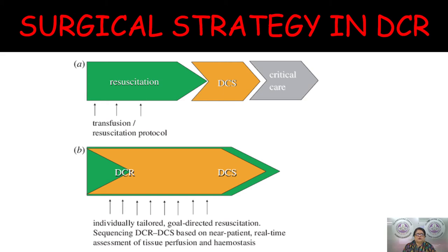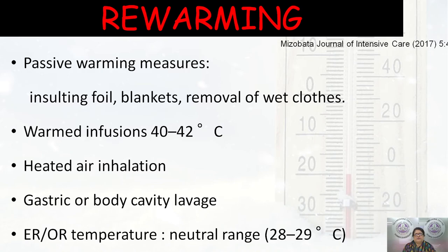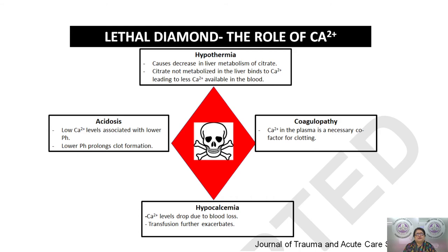Surgical strategy is integrated into damage control resuscitation — once resuscitated, the patient should go for damage control surgery and return to ICU for definitive management. Rewarming should always be considered using insulating foils, blankets, removal of wet clothes, warmed infusions at 40–42°C, heated air inhalations, or invasive warming such as gastric and body cavity lavage, keeping the OR or ER at a neutral temperature. Calcium is a critically important cation central to coagulation — acidosis causes calcium loss and hypothermia causes calcium deficiency. The lethal triad is slowly paving its way into a lethal diamond, making calcium management essential.